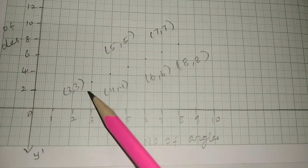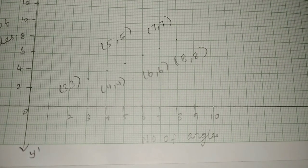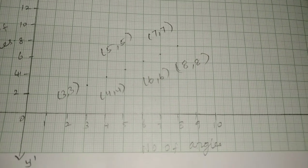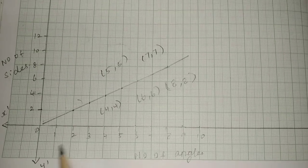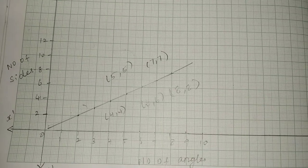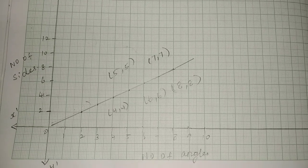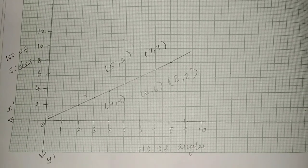Join all the plotted points to draw the line. The graph is now complete. This shows a straight-line relationship between the number of angles and the number of sides of a polygon. Thank you.